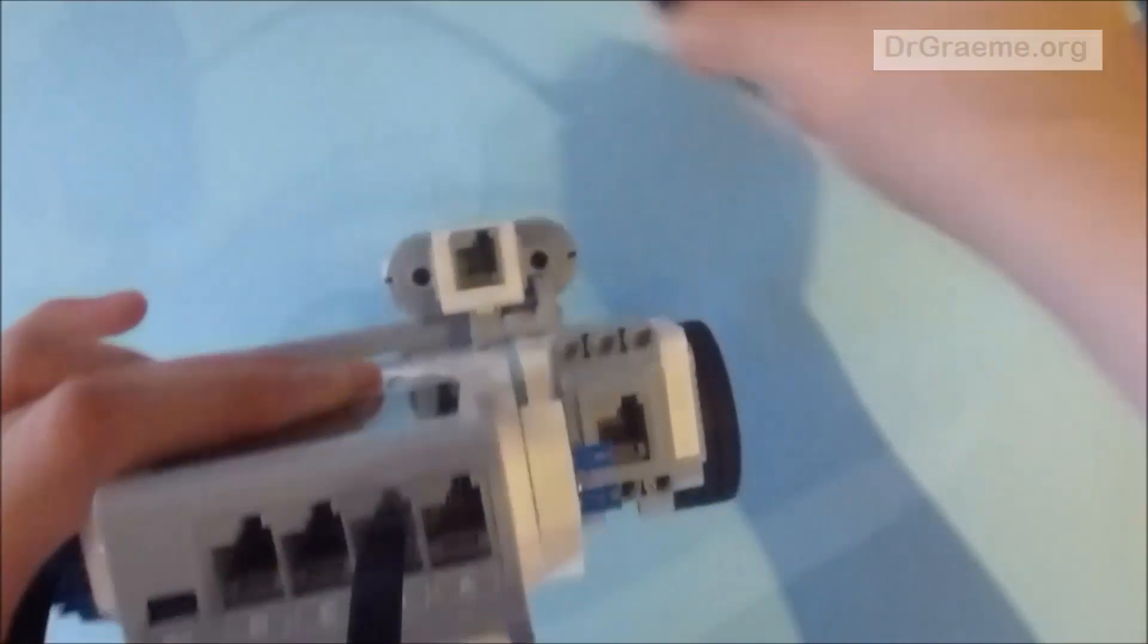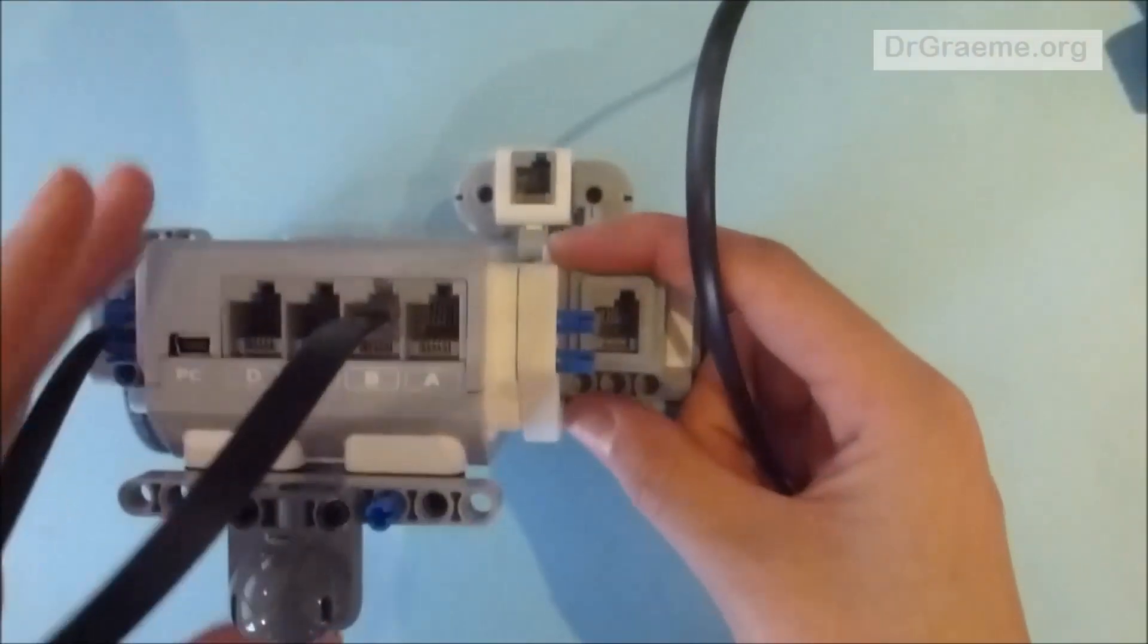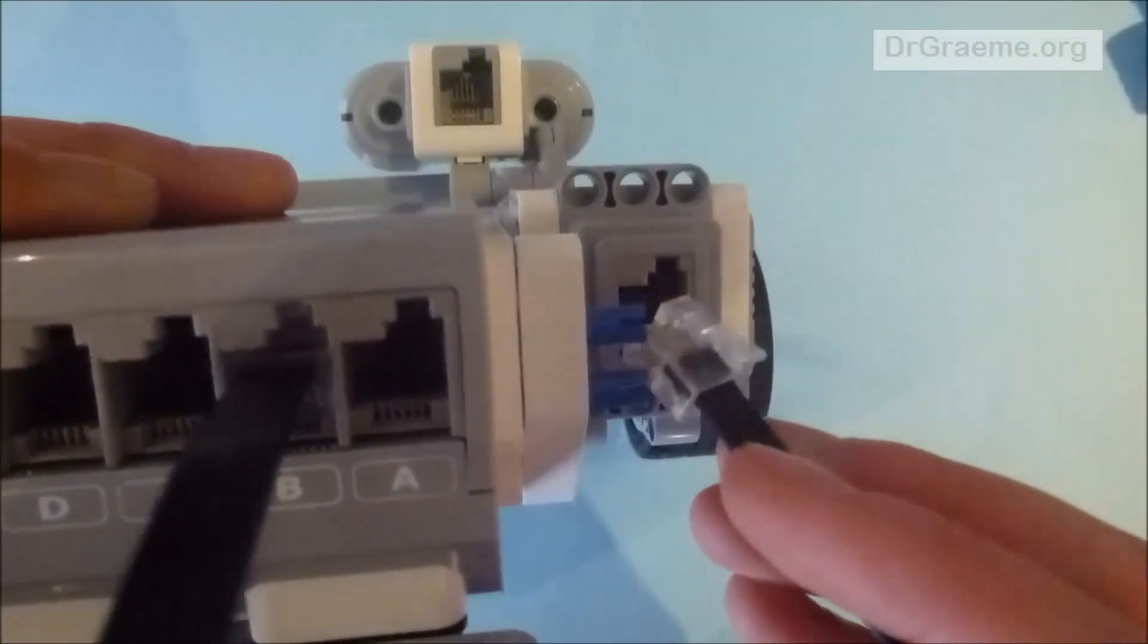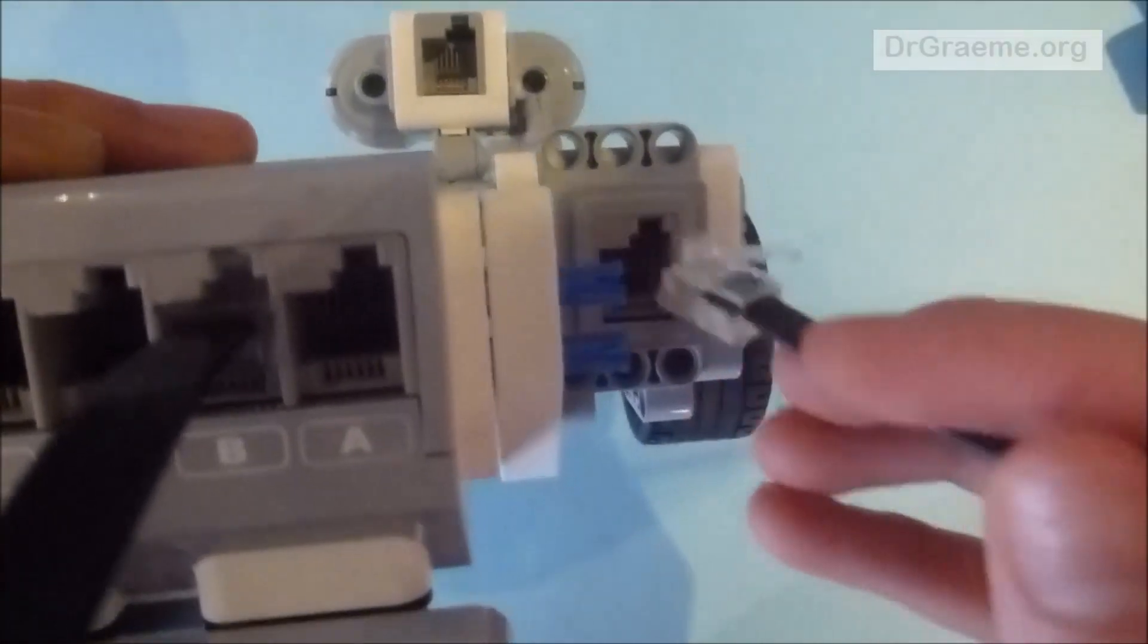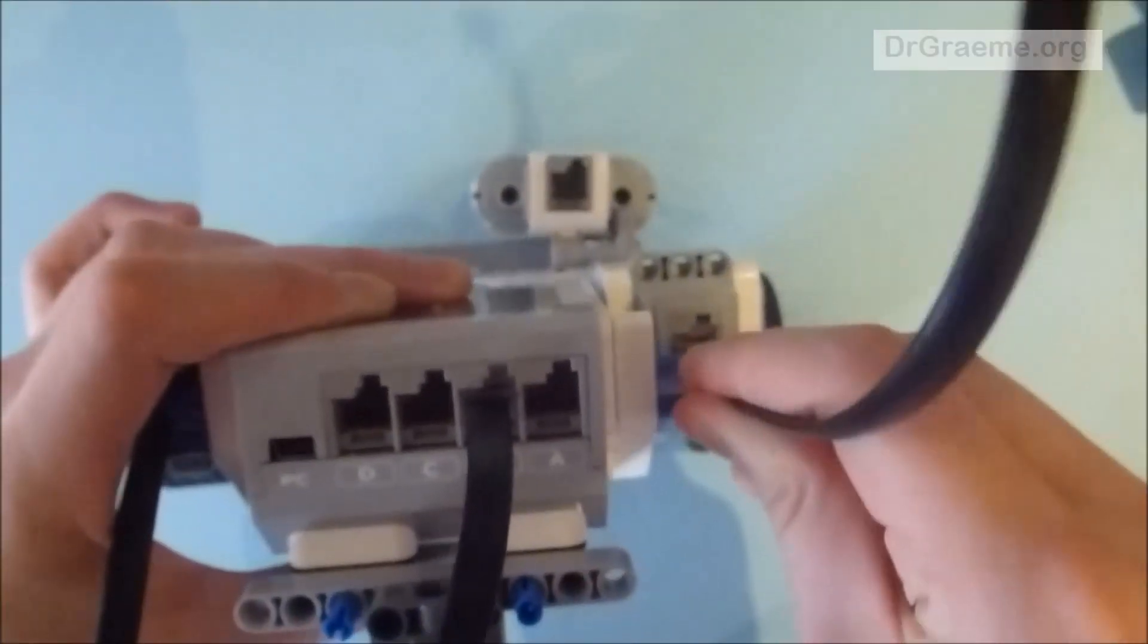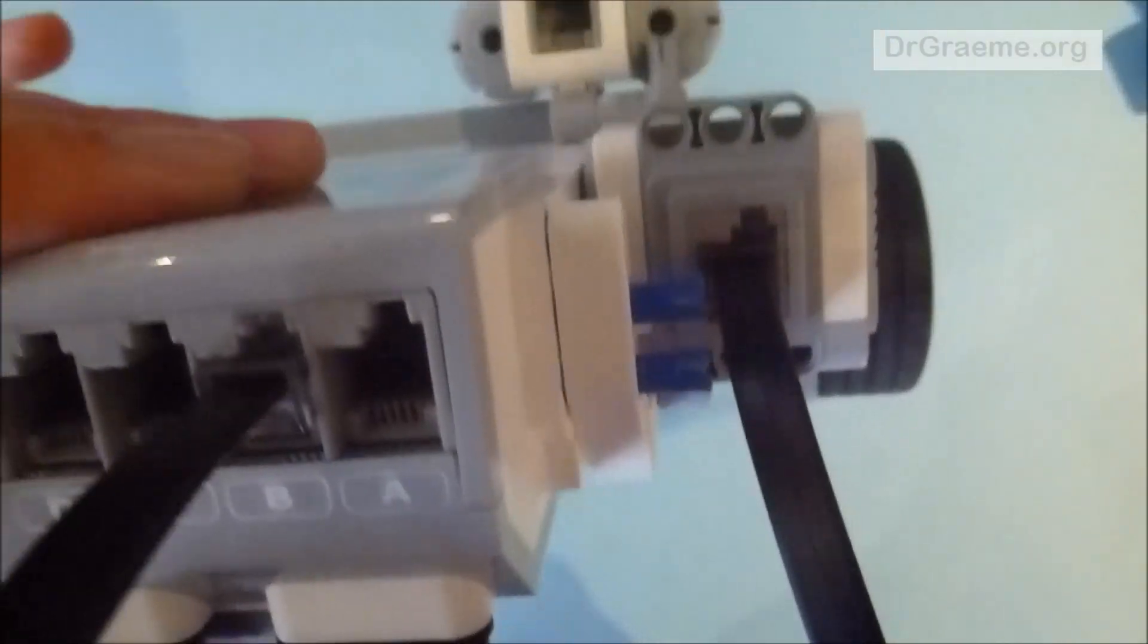Now for the other motor, on this end, I am going to do the same thing. I will make sure that the flaps and the cutout are in the same position, and then push them in. It should look like this.